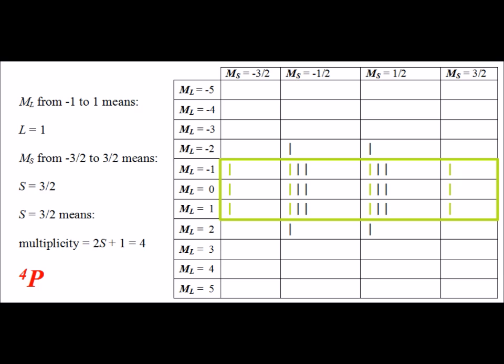The next rectangular region of interest is colored in lime green. It goes from big M sub S equals minus three halves to plus three halves, telling us spin S equals three halves. The big M sub L values run from minus one through zero to plus one, telling us big L equals one. L equal to one corresponds to a capital P. Since the spin is three halves, the spin multiplicity is two times three halves plus one, which equals four. Therefore we have a quartet P symbol.